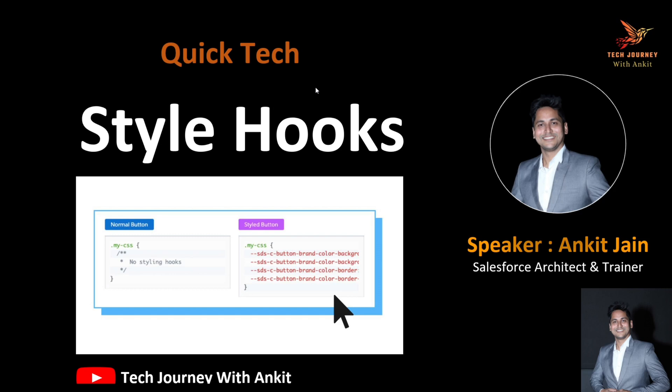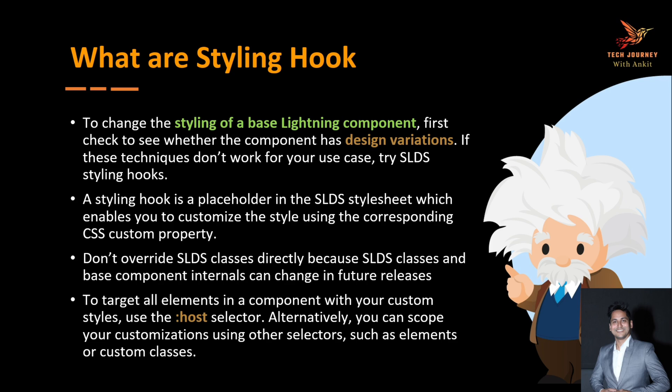To get started, first let's understand what a styling hook actually is. Whenever we have to change the styling of any lightning-based component we generally go for the variant attribute. For example, if I have to change the color of a button I will use the variant attribute and define it as brand, neutral, or destructive. But what if I don't want to use the standard colors that come with the variant attribute? What if my brand demands that my button color needs to be violet or purple? That's when we go for the styling hook.